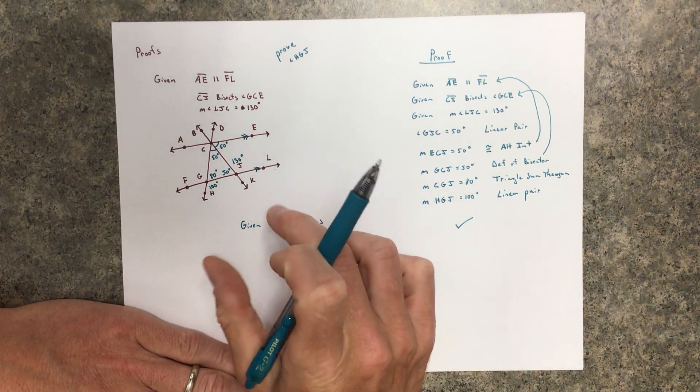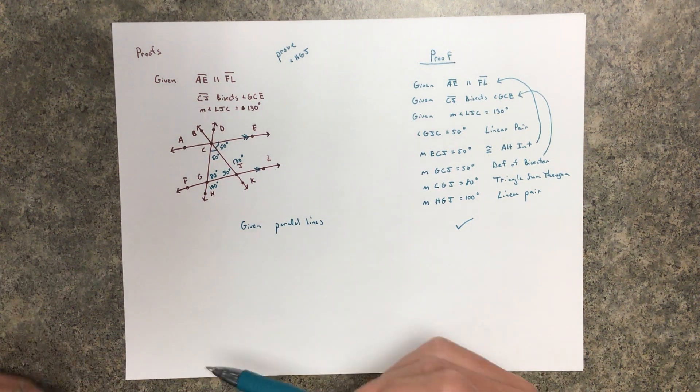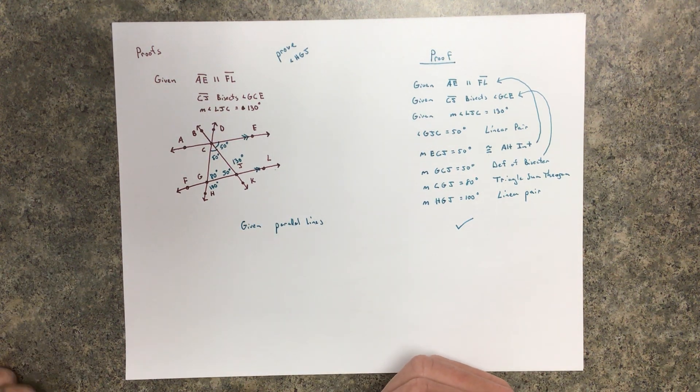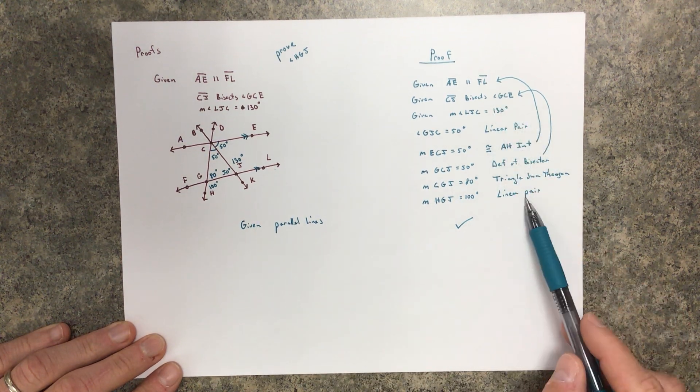These particular parallel proofs, the original setup is the lines are parallel, and then you're going to draw conclusions based on knowing that the lines are parallel. In this particular one, you're going to use alternate interiors, and then you're going to use the old stuff.